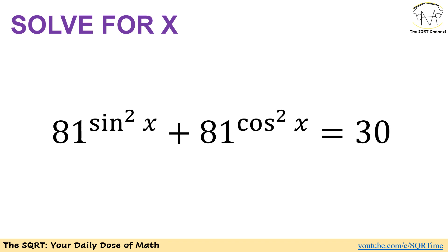Hello everyone, welcome to the SQRT channel. In this video we have another interesting problem. In this problem we have 81 to the power of sine squared of x plus 81 to the power of cosine squared of x equals to 30.